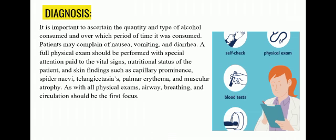For diagnosis, it is important to ascertain the quantity and type of alcohol consumed and over which period of time it was consumed. Patients may complain of nausea, vomiting and diarrhoea. A full physical exam should be performed with special attention paid to vital signs, nutritional status, and skin findings such as capillary prominence, spider naevi, telangiectasia, palmar erythema and muscular atrophy. Airway, breathing and circulation should be the first focus. A blood test or breath test is performed first, then a sample of urine and blood is sent to the laboratory for further diagnosis.